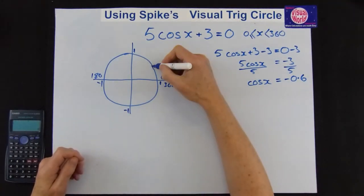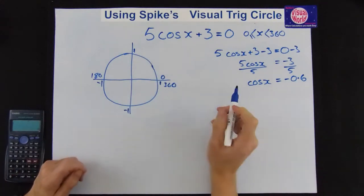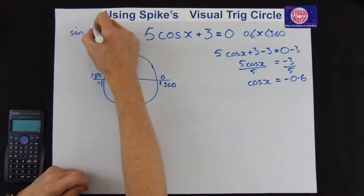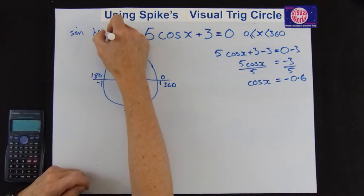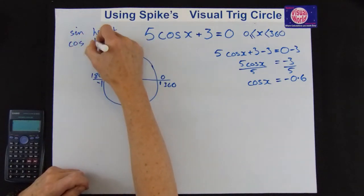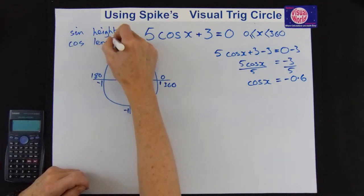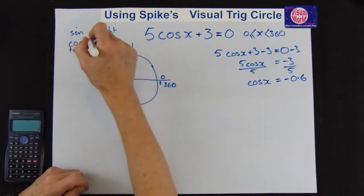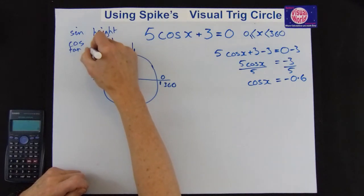So we know that sine is the height. Cos is the length. And tan is the gradient.